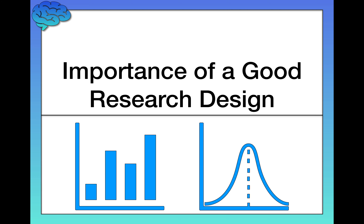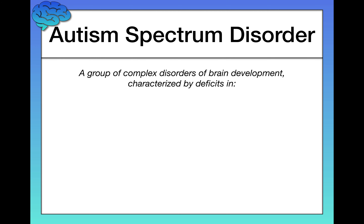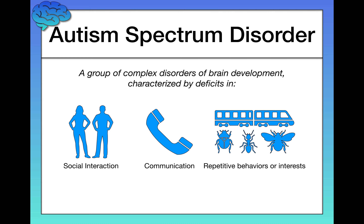In this video my job is to basically motivate why we care about research designs. I want to start by introducing autism spectrum disorder. This is a group of complex disorders of brain development, often arising in childhood. An autism spectrum disorder, or ASD, is characterized by deficits in social interaction and deficits in communication — both nonverbal and verbal — and by repetitive behaviors.